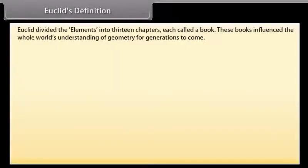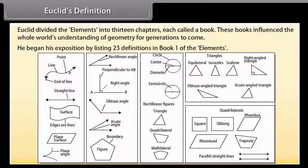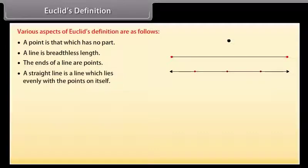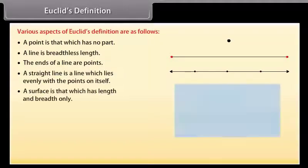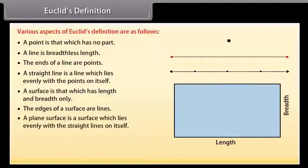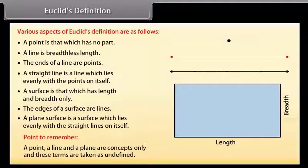Euclid's definition. Euclid divided the elements into 13 chapters, each called a book. These books have influenced the whole world's understanding of geometry for generations to come. He began his exposition by listing 23 definitions in book 1 of the elements. A few of them are: A point is that which has no part. A line is breadthless length. The ends of a line are points. A straight line is a line which lies evenly with the points on itself. A surface is that which has length and breadth only. The edges of a surface are lines. A plane surface is a surface which lies evenly with the straight lines on itself. Point to remember: A point, a line, and a plane are concepts only, and these terms are taken as undefined.